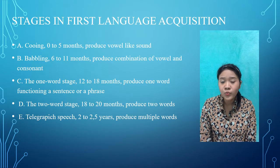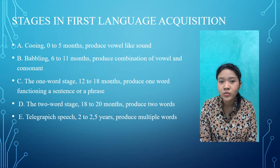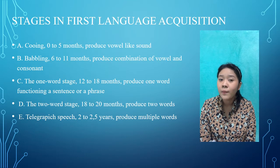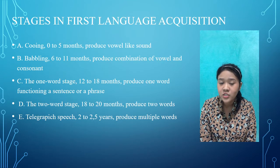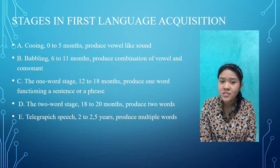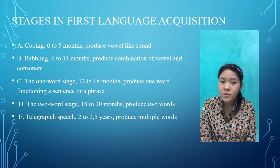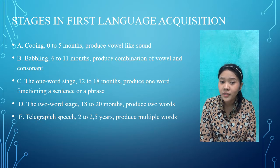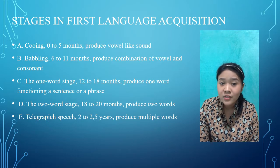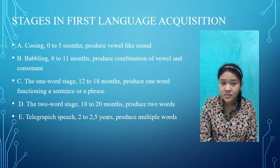The two-word stage occurs around 18 to 20 months old, where children produce two distinct words and a variety of combinations, such as 'baby chair', meaning 'this is baby's chair'. These two-word utterances can be interpreted differently depending on different circumstances.